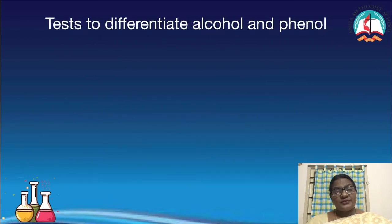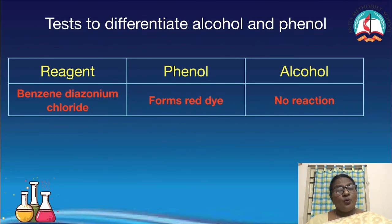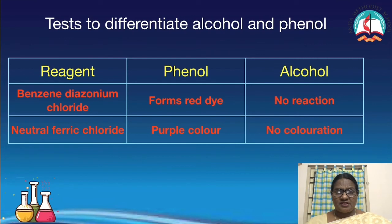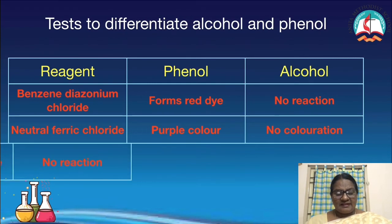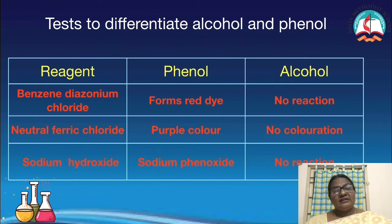Now, let us see some tests to differentiate alcohol and phenol. First: when we react with benzene diazonium chloride, only phenol will give the red dye test — alcohol will not give the dye test. Second: neutral ferric chloride — when added, phenol gives a purple or violet color immediately, which is a good test for phenol and a common objective question; aliphatic alcohols do not give any color. Third: sodium hydroxide — only phenol forms sodium phenoxide with NaOH; alcohols do not. These three tests can distinguish alcohol from phenol.